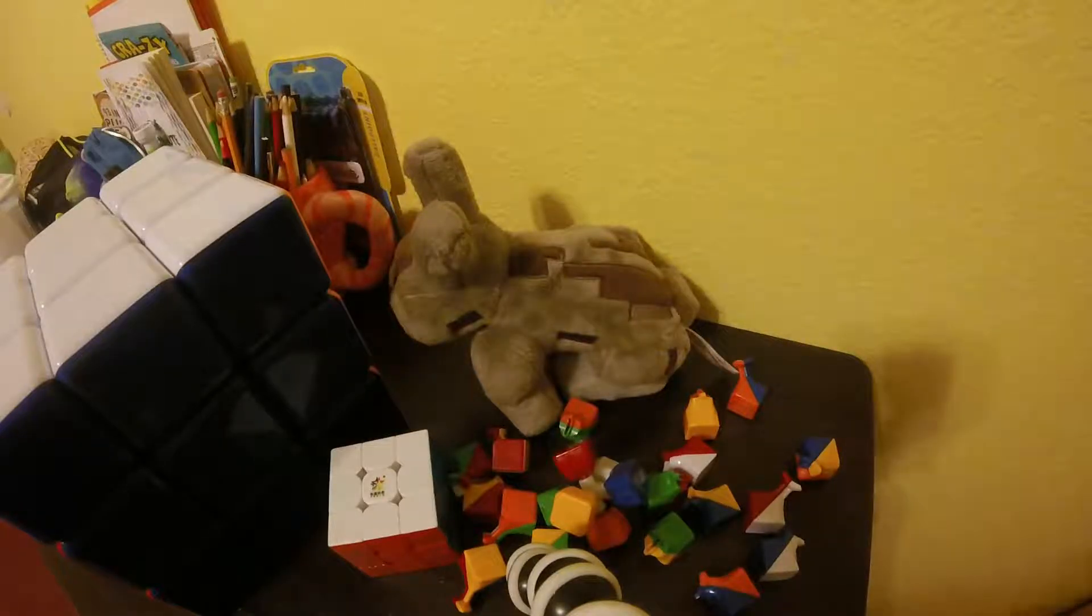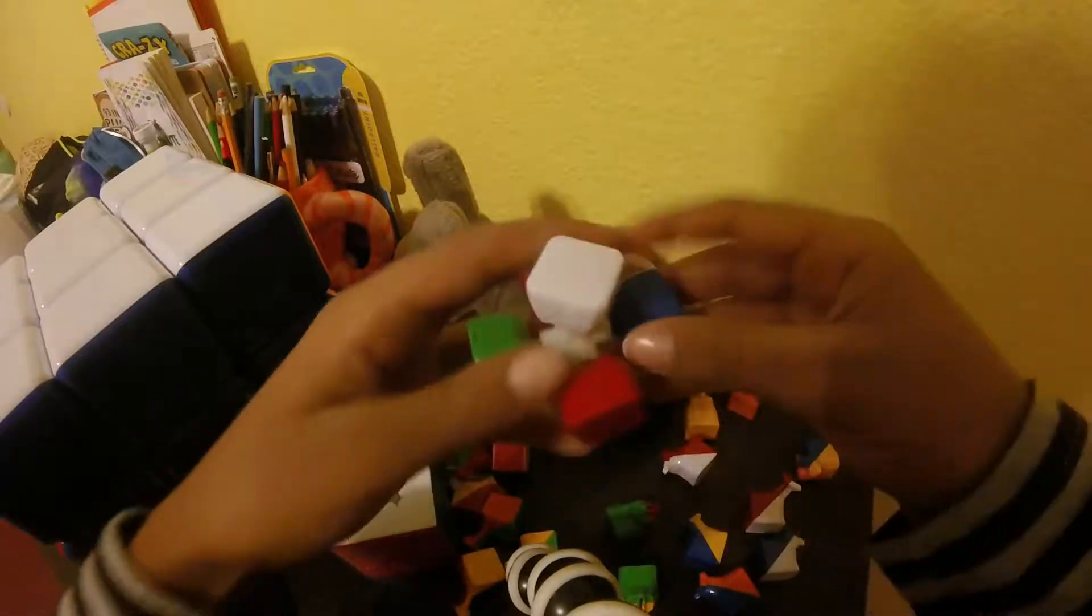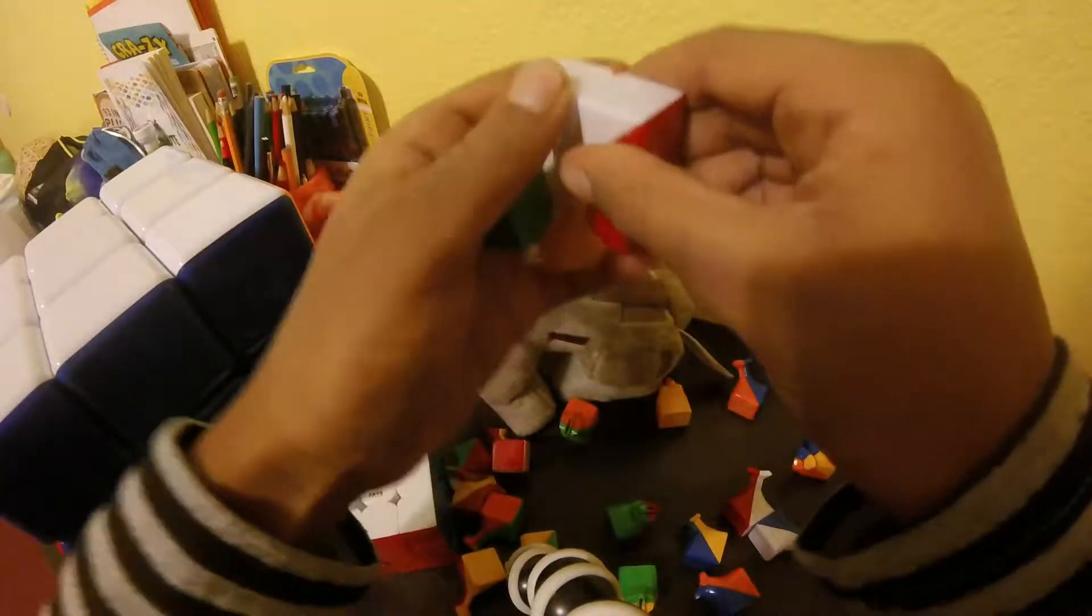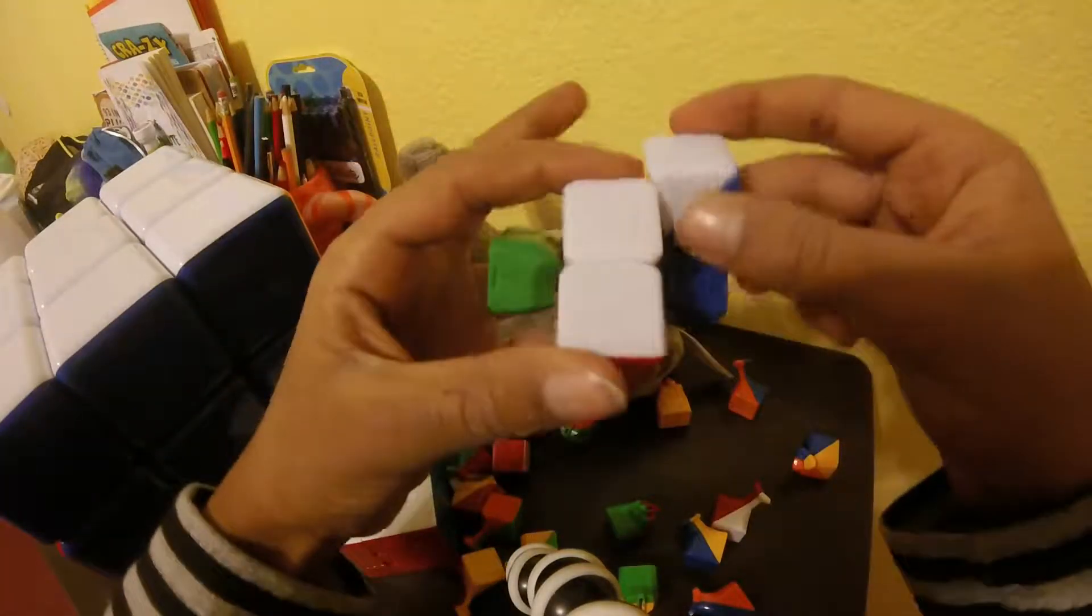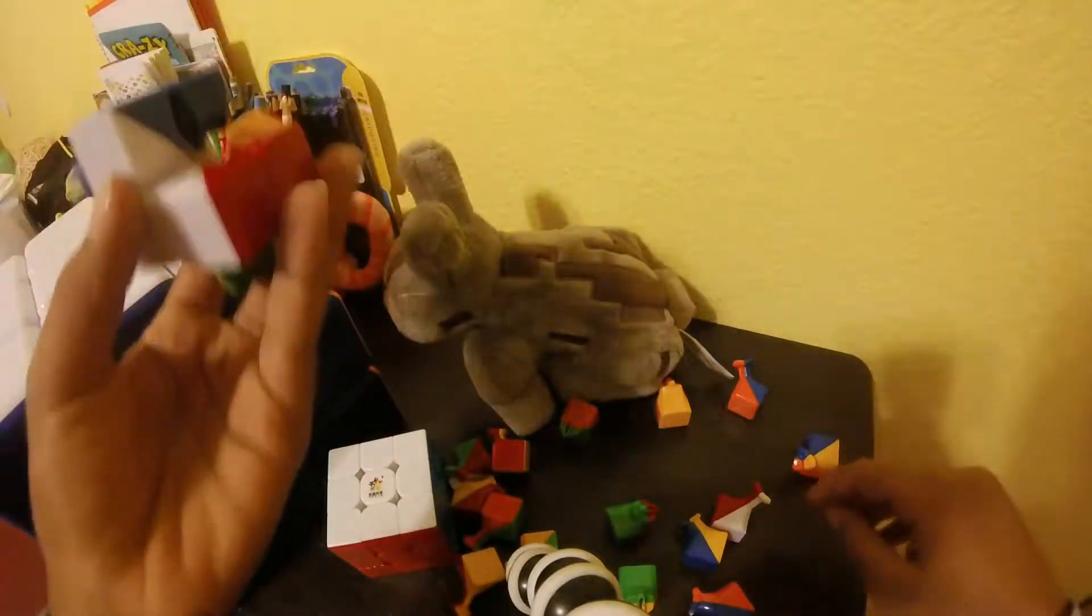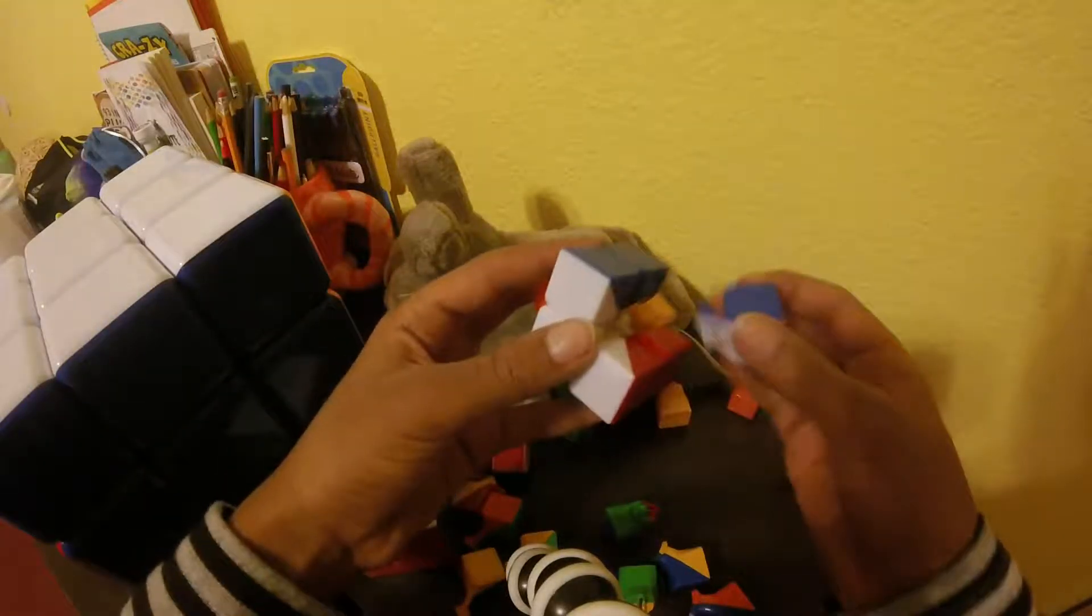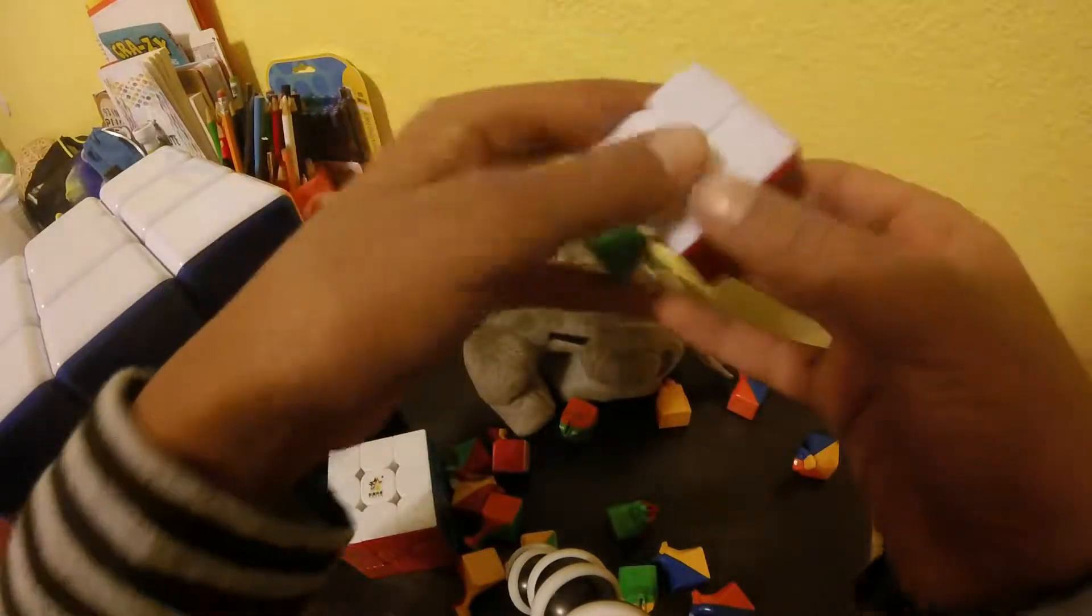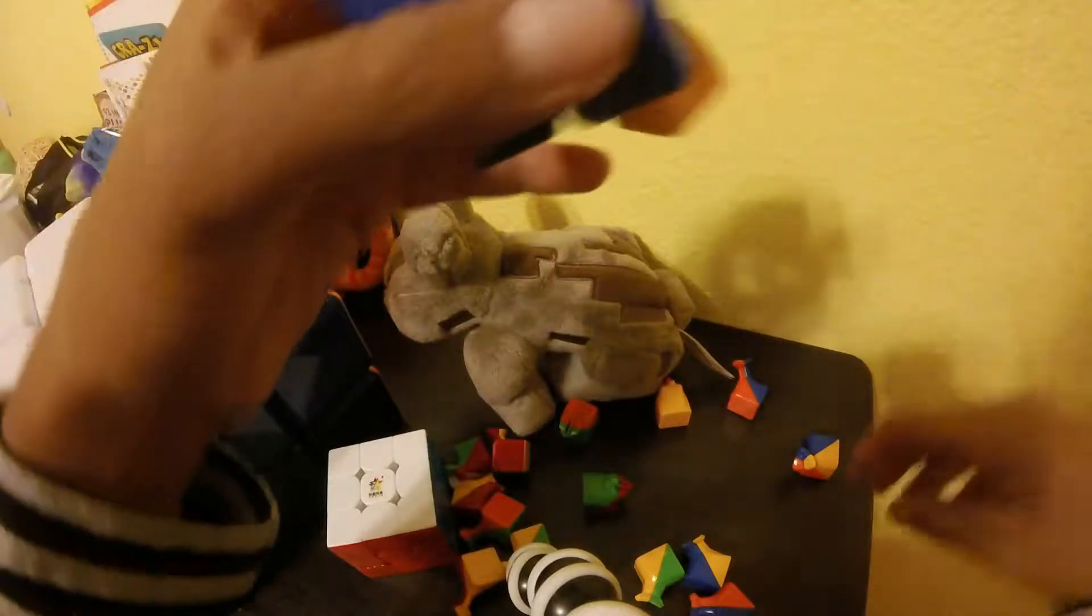This is where I will be showing you how to assemble it. The first thing you want to do is put an edge in, like that. Then you put another edge in right next to it, so you form this L-ish shape. Then you put a corner in the middle of that L, so it becomes a square. Then you put another edge right there, so it becomes a full cube.